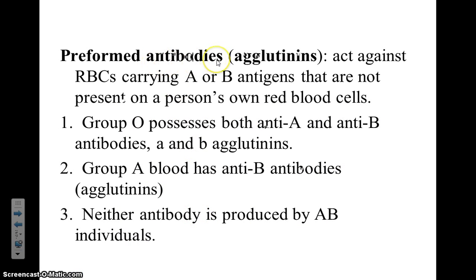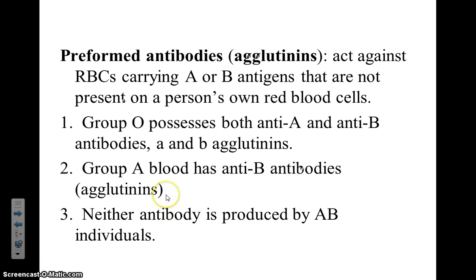The antibodies produced in our body against foreign blood are also known as agglutinins. You have to be careful with some of this language because we also have agglutinogens, which are synonymous with the blood antigens. Agglutinins, without the extra G, are synonymous with the antibodies. So a type A person will produce anti-B antibodies or agglutinins. Type B individuals will produce anti-A antibodies or agglutinins.